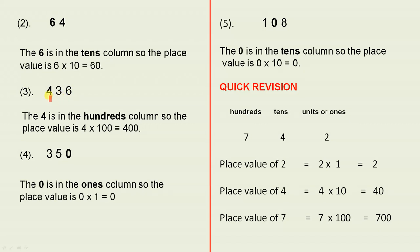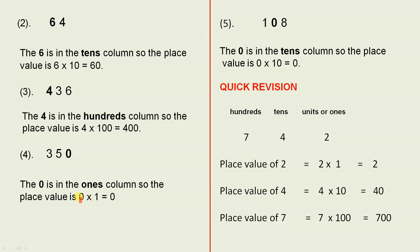Four hundred and thirty-six — the four is highlighted. The four is in the hundreds column, so the place value is 4 times 100 equals 400. Three hundred and fifty — the zero is highlighted. The zero is in the ones column, so the place value is 0 times 1 equals 0. One hundred and eight — the zero is highlighted. The zero is in the tens column, so the place value is 0 times 10 equals 0.